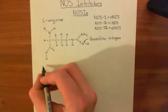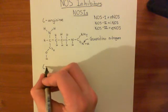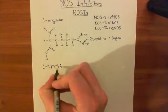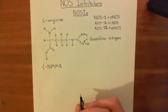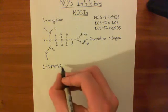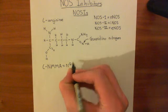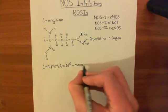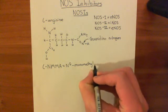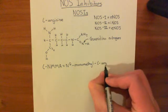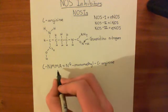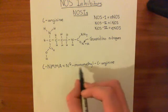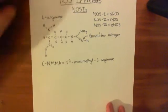The first inhibitor is a non-selective inhibitor that will inhibit all three NOS isoforms. It is often abbreviated to L-NMMA, which stands for N-G monomethyl L-arginine. They took the L and put it at the front, then the N from NG, then MM from monomethyl, and then A from arginine — giving L-NMMA.